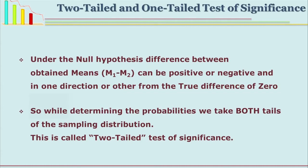When we see the difference between two means and are interested in whether it is significant, we must also know whether our distribution is one-tailed or two-tailed. Under the null hypothesis, if the distribution is normally distributed, mean1 minus mean2 can be on the positive side or the negative side. So this is two-tailed — both extremes are in the distribution and the researcher is interested in the difference on either side. This is called a two-tailed test of significance.